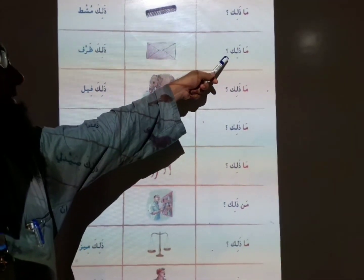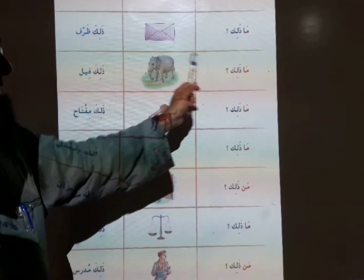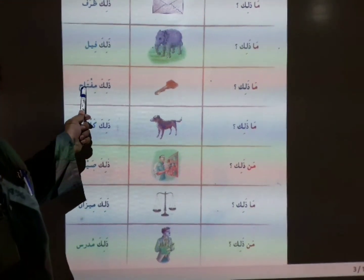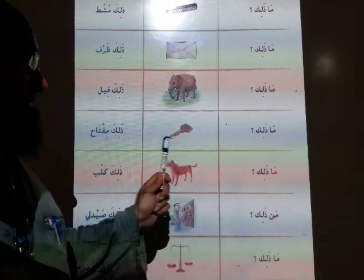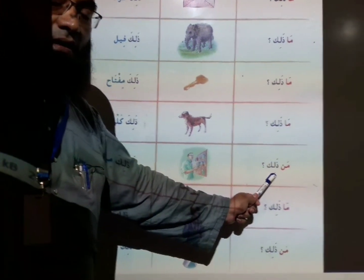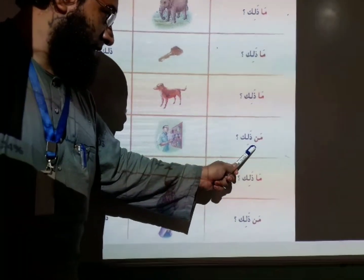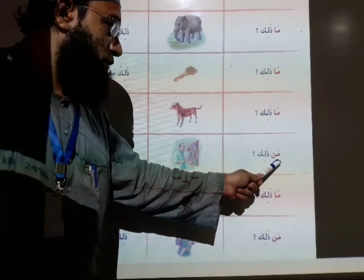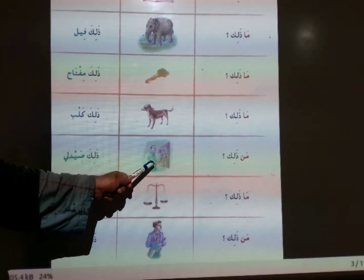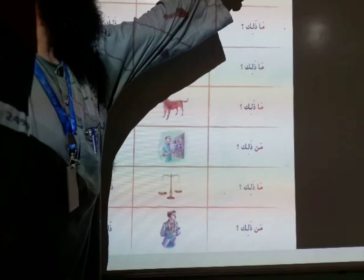Ma dhalika — what is that? Dhalika warfun — that is anwala. Ma dhalika — what is that? Dhalika mushtahun — that is ki. Ma dhalika — what is that? Dhalika kalbun. Listen: in this sentence, use the question word 'man'. Man is used for zabil ukul — meaning living things. Any living person, use 'man'; for non-living things, use 'maa'.